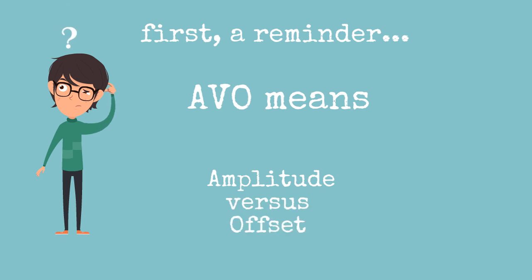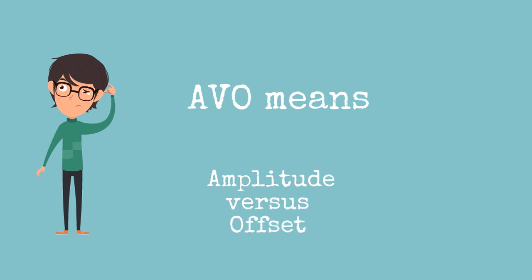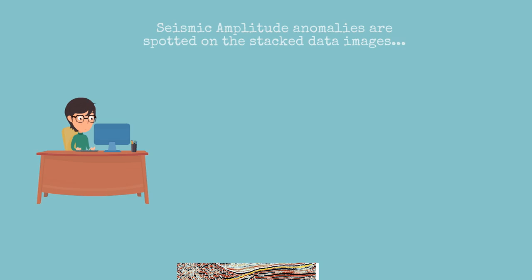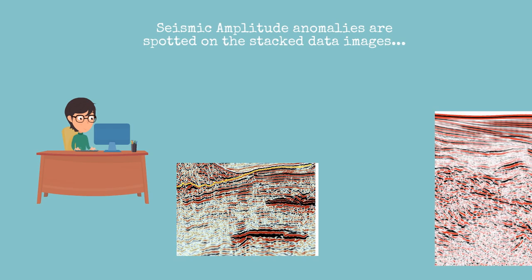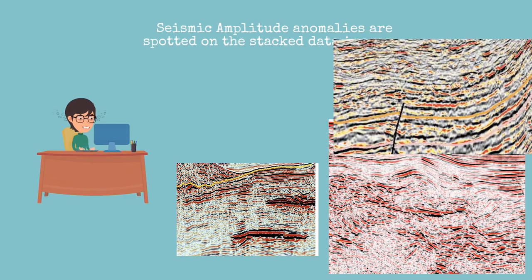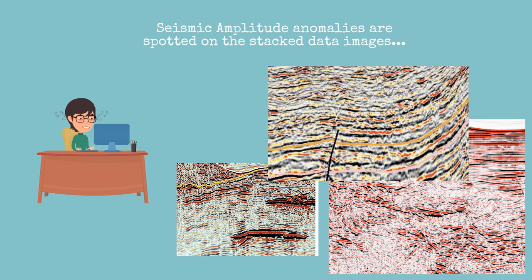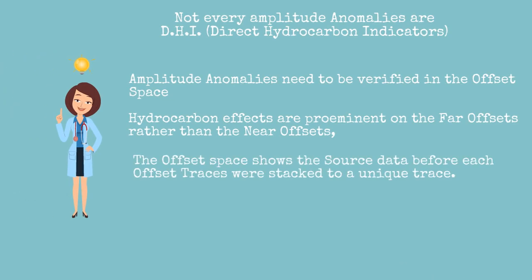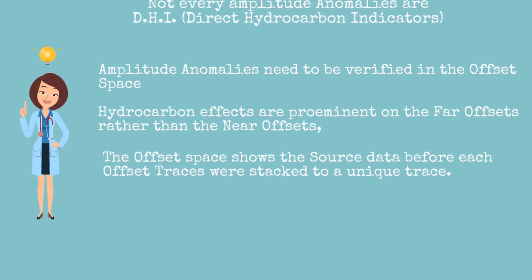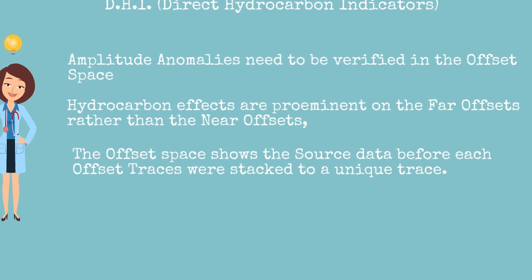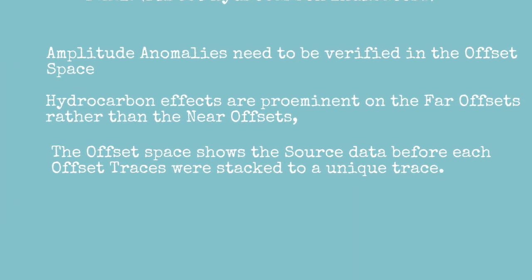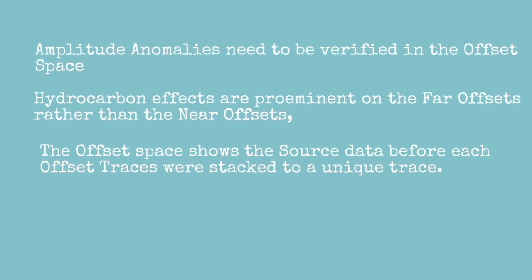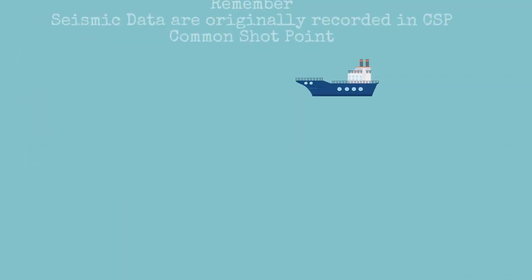You have a seismic line with either a bright spot, an amplitude phase reversal, or a dim spot. Any of these figures could relate or not to an AVO effect. Not every amplitude is related to a DHI, and to verify this you may want to analyze them in the offset domain, where the data is not yet stacked to a single trace. In the offset domain, the hydrocarbon effects slow down the P-wave reflections for the far offsets, and this is the phenomenon that we need to quantify.